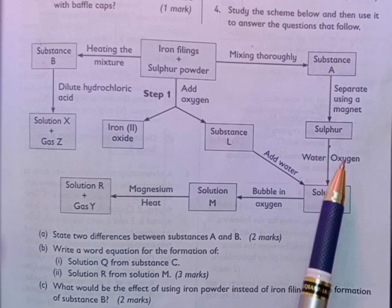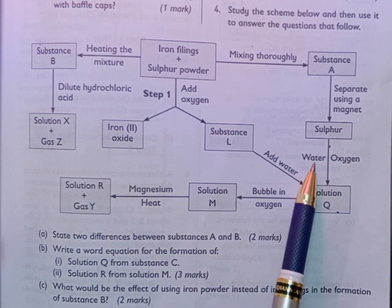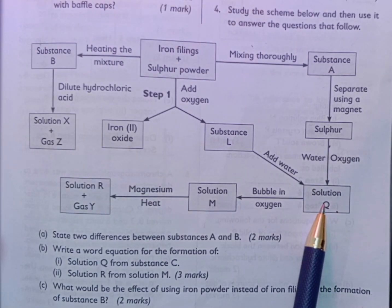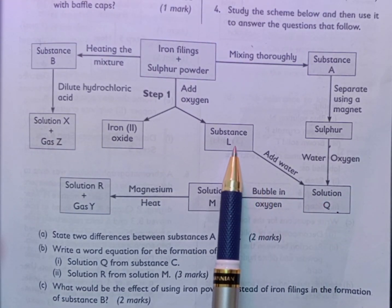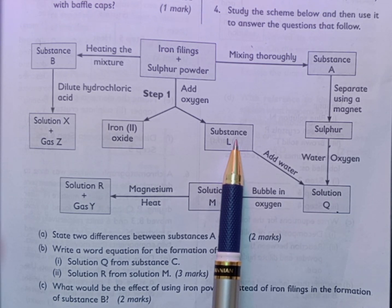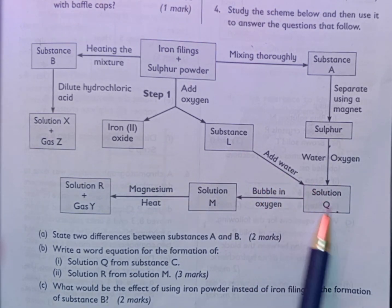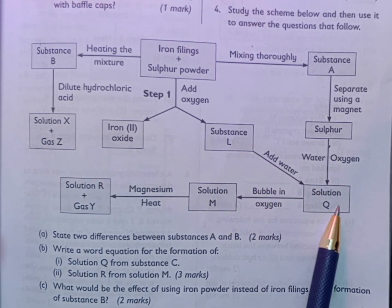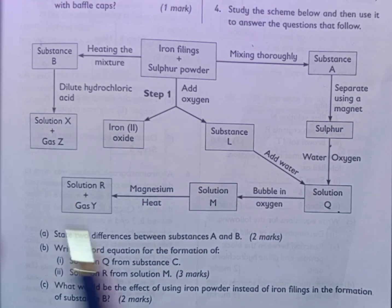Then sulfur is going to be reacted with oxygen and water to form sulfurous acid, which is the same compound that was formed when sulfur dioxide was dissolved in water, forming solution Q. That is how the flowchart works.